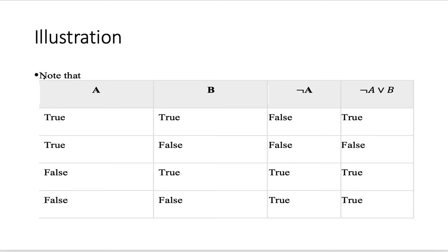I want you to note in that final column of this next illustration, we have the same truth values as A implies B. That means that these two statements are equal. But we have not A or B.